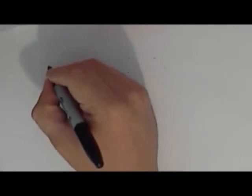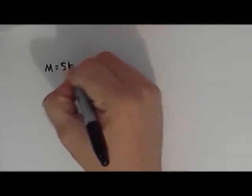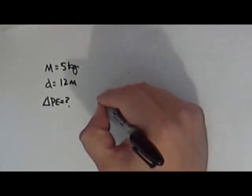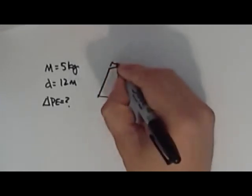Number four: It is said that Galileo dropped objects off the Leaning Tower of Pisa to determine whether heavy or light objects fall faster. If Galileo had dropped a 5-kilogram cannonball from a height of 12 meters, what would have been the change in potential energy? Mass equals 5 kilograms, and the distance fallen is 12 meters. When we talk about the change in PE, that means the difference between starting potential energy and finishing kinetic energy.